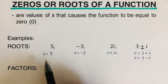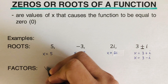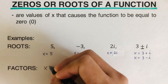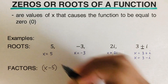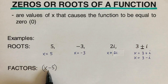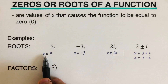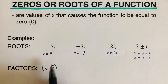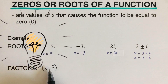We can rewrite the root x = 5 as (x − 5). If we set that equal to zero and add five from both sides, we get x = 5 back. So we simply switch the sign of the root — that gives us the factored form.